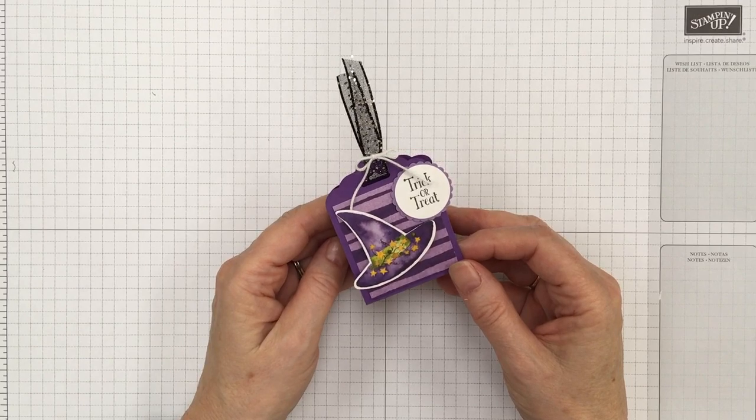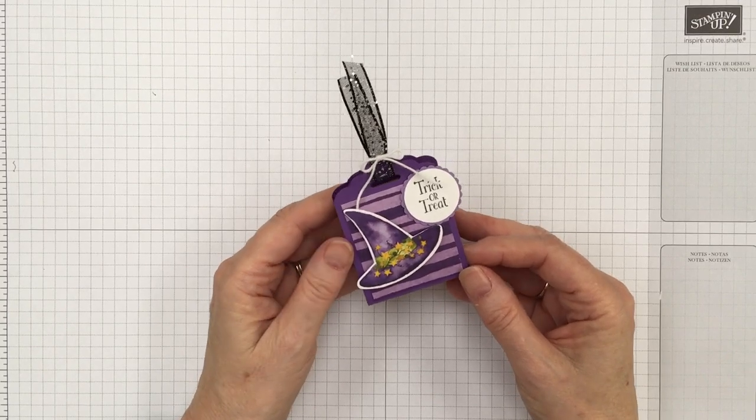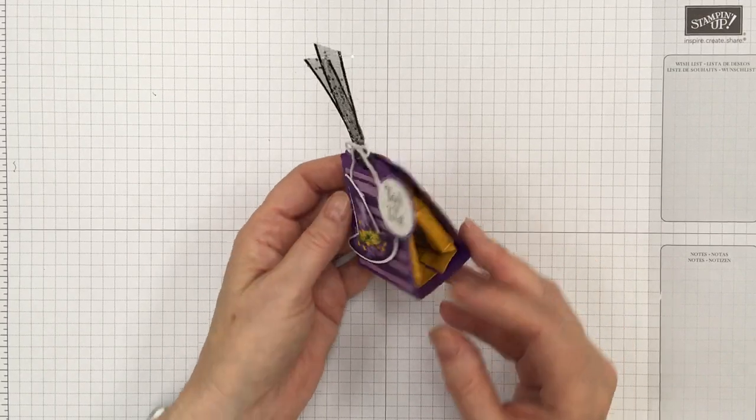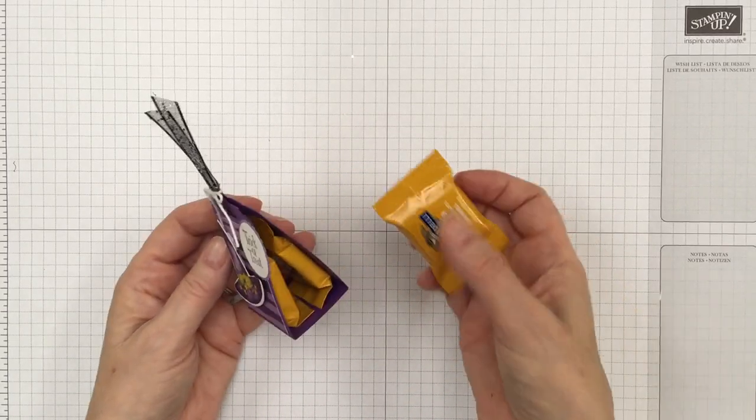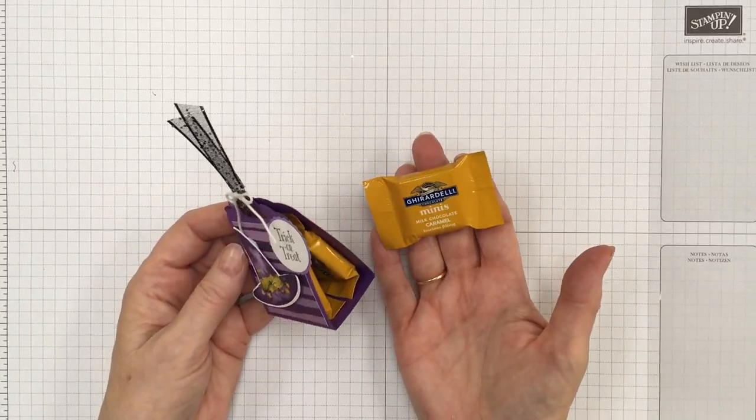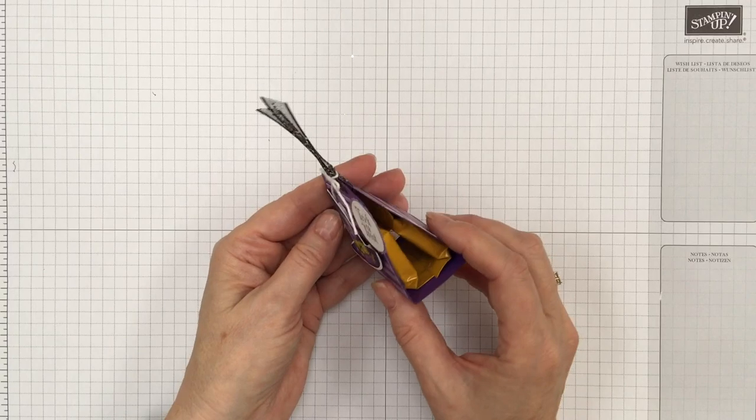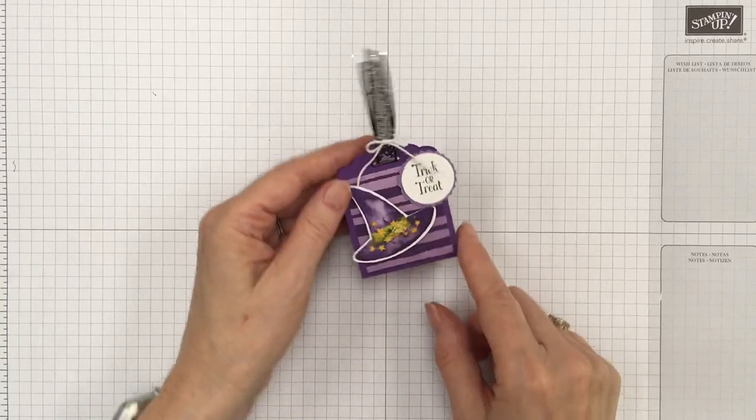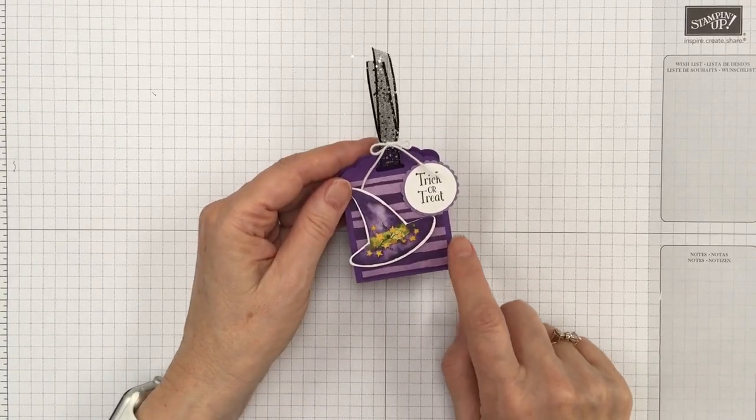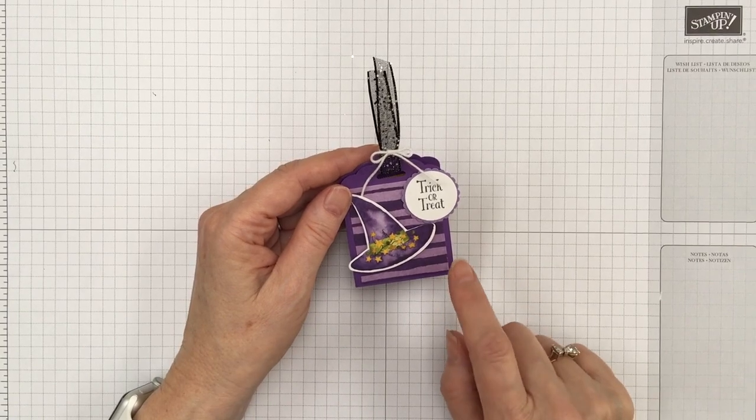Hi there and welcome. This is Tracy at StampleWithTracy.com and today we're going to make this little treat holder. I have some Ghirardelli minis inside and they're just perfect for this treat holder. Now the one we're going to make we're going to still use this paper but we're going to switch out the gorgeous grape for some Highland Heather.